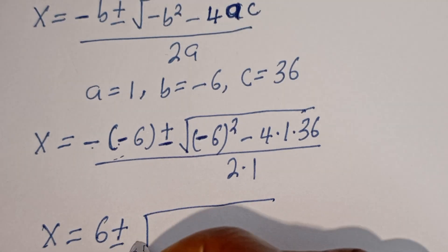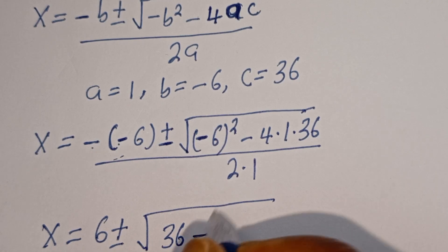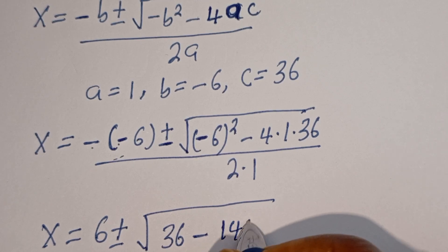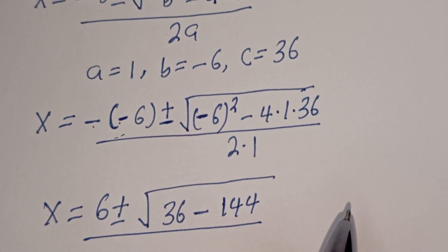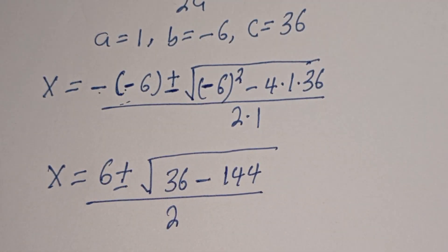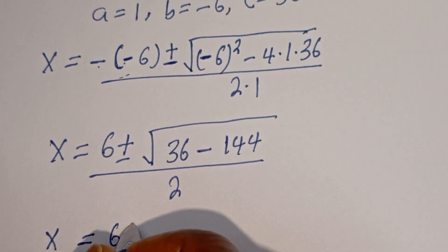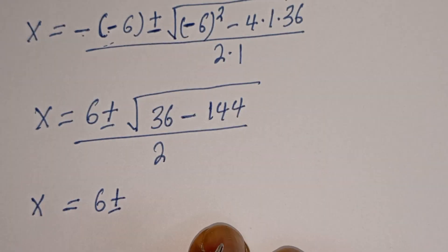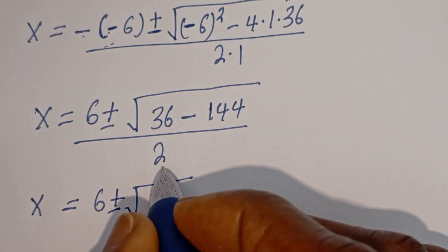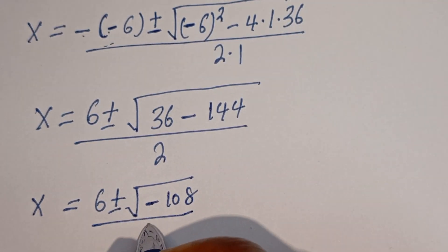We substitute: s is equal to 6 plus or minus square root of negative 6 squared, that is 36, minus 4 multiplied by 1 multiplied by 36, that is 144, divided by 2 multiplied by 1, that is 2. So s is equal to 6 plus or minus square root of 36 minus 144, that is minus 108, divided by 2.